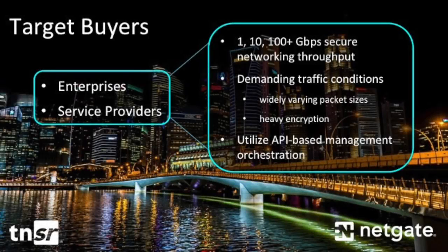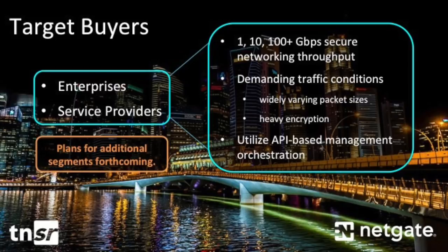The initial Tensor offering is targeted at large enterprises and service providers. These organizations need high-bandwidth, secure networking throughput under the most demanding traffic conditions, typically characterized by widely varying packet sizes and levels of encryption. They also rely almost exclusively on API-based management orchestration. We do plan to make Tensor available to additional market segments in the near future.